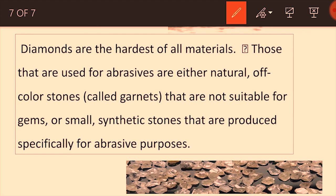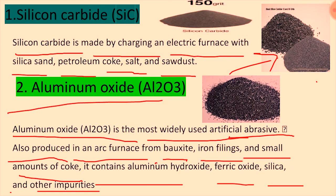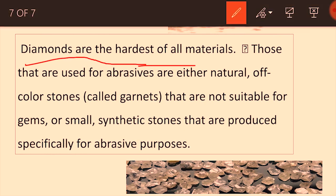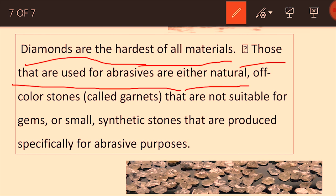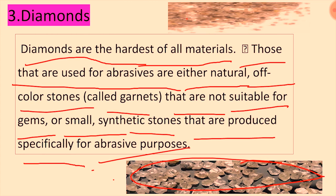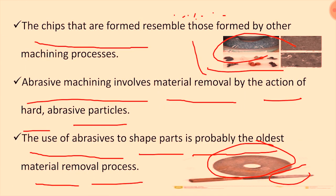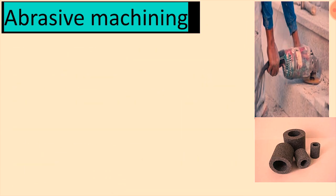The last example is diamond. Diamond plays a significant role as an abrasive — diamonds are the hardest material in the world. Diamonds used for abrasive purposes can be natural. After-color stones like garnets that are not suitable for gems, or small synthetic stones that are produced, are also used as abrasive materials.